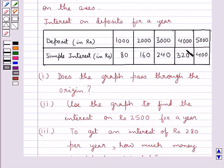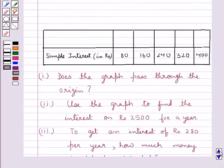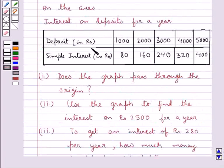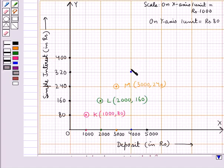The next point is N with coordinates (4000, 320), where 4000 is the deposit and 320 is the simple interest. To mark this point we locate 4000 on the x-axis, then move along the y-axis to the point corresponding to 320, and name it N with coordinates (4000, 320).